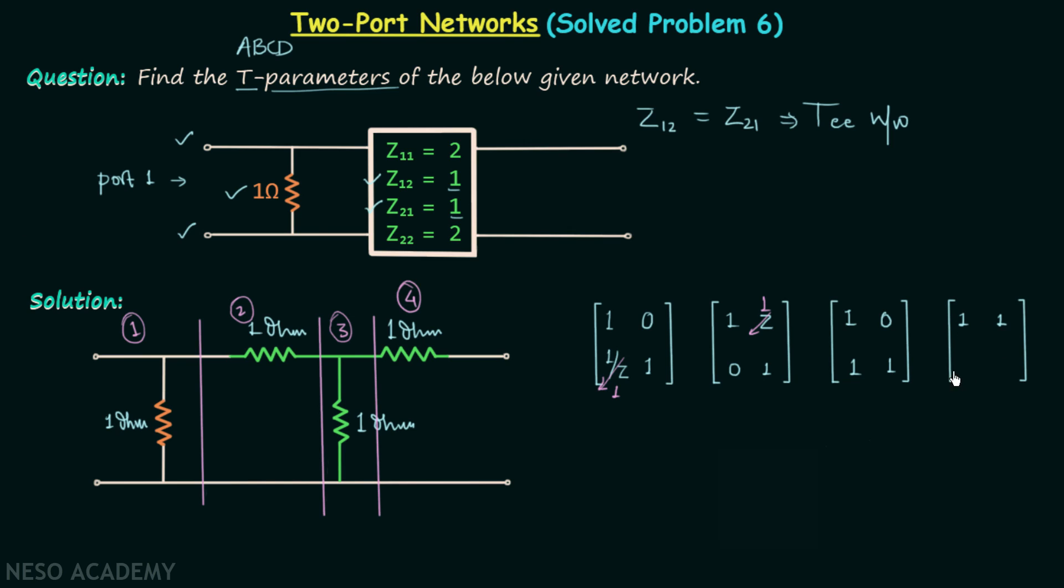Now in order to have the T-parameters matrix of the overall network, we will multiply the matrices we are having properly. That is, we should multiply these two matrices first, and then we should multiply the resultant matrix to this matrix, and then the resultant matrix to this matrix.